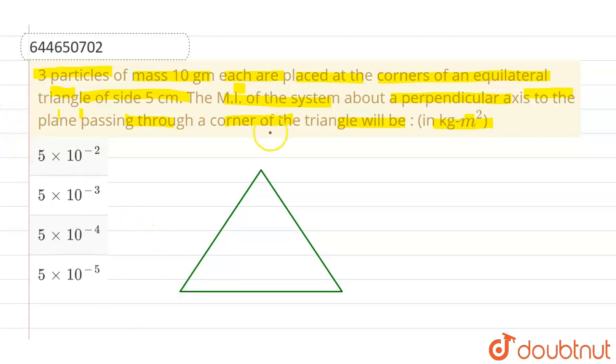And there are three particles. The first one let's say is here, which is having a mass of 10 gram, second one is here which is again having a mass of 10 gram, and the third one is here which is also having a mass of 10 gram.